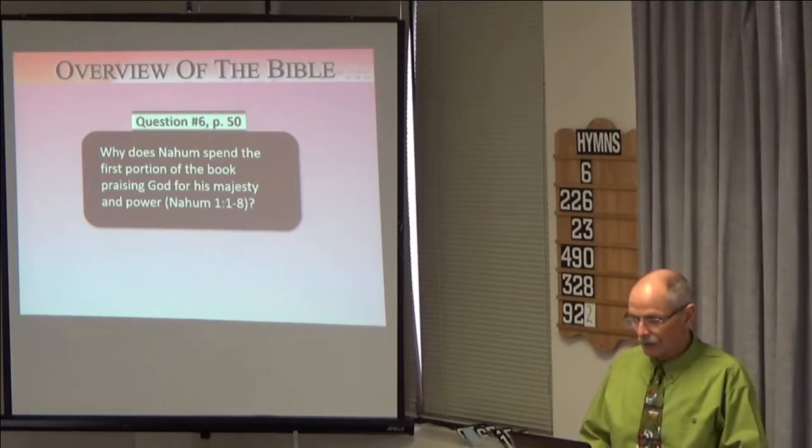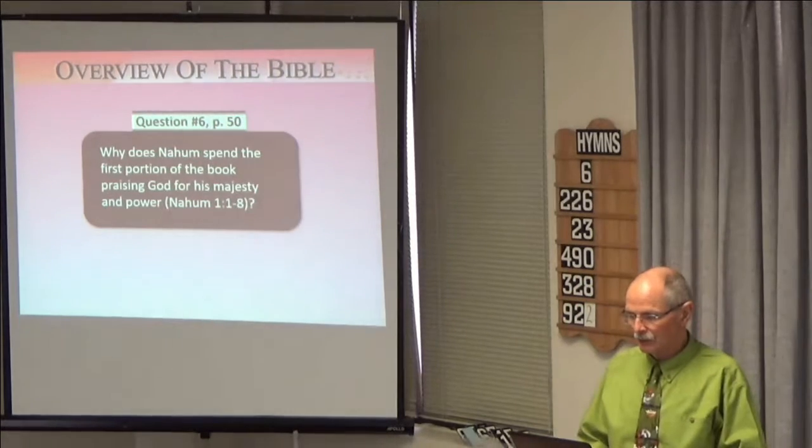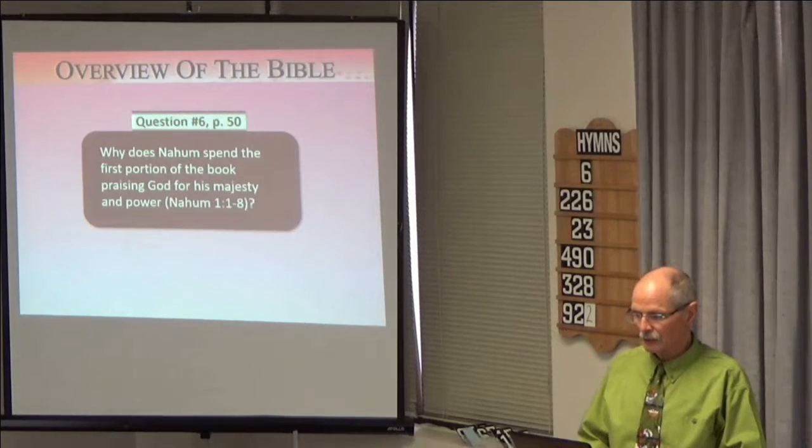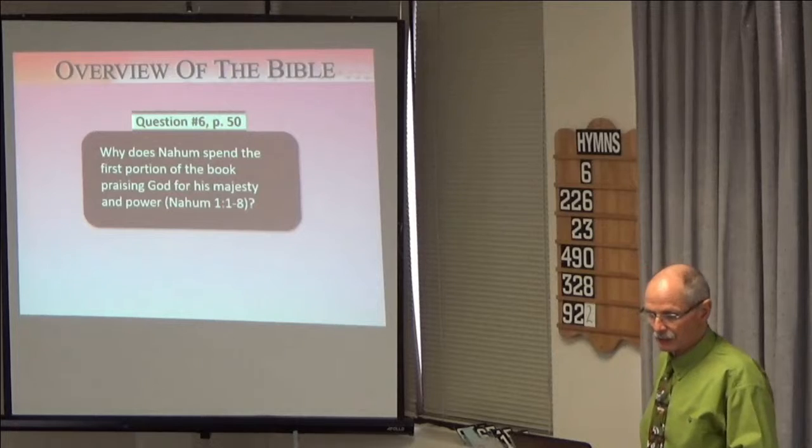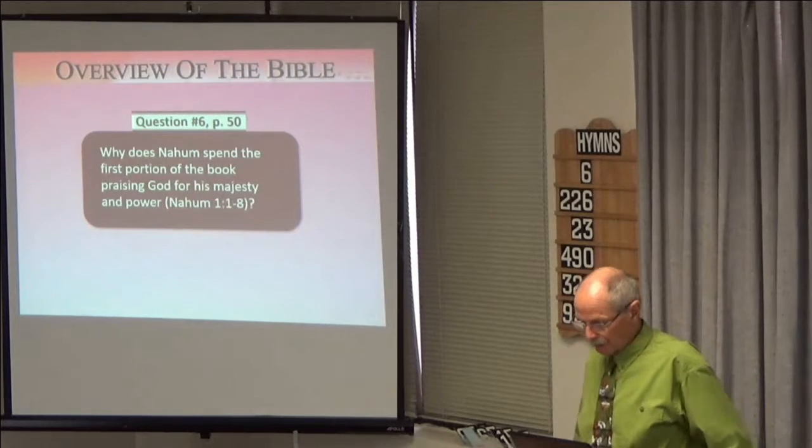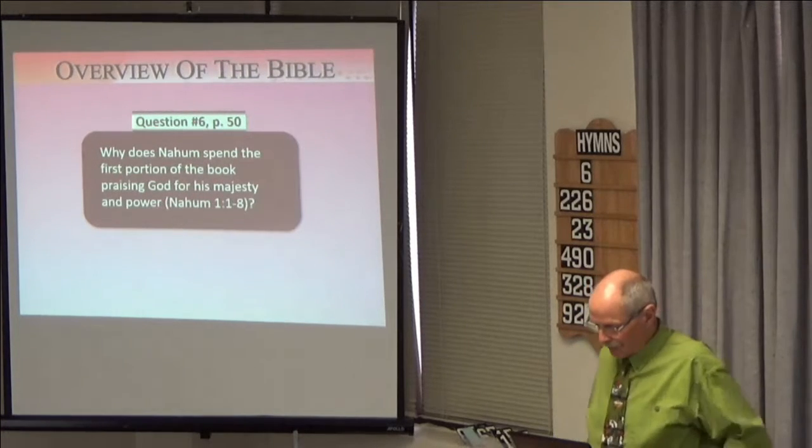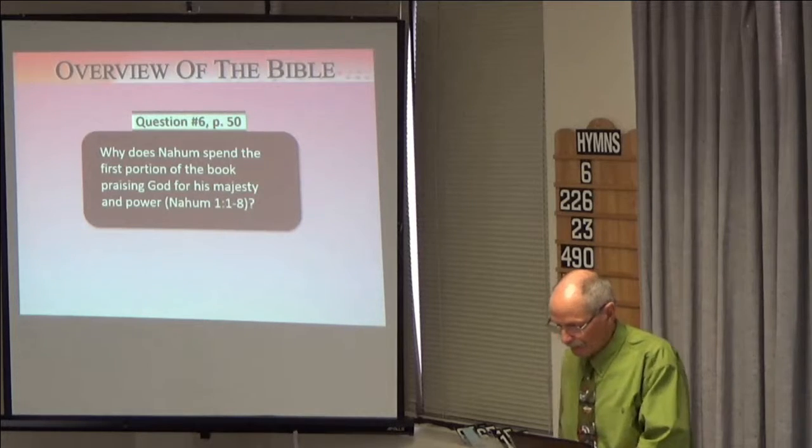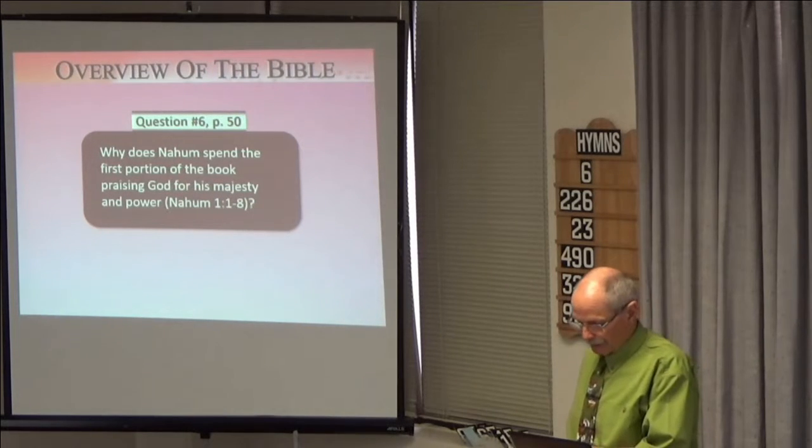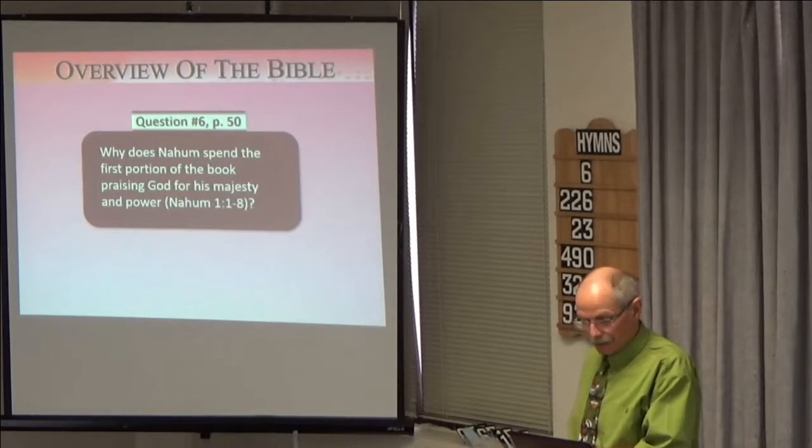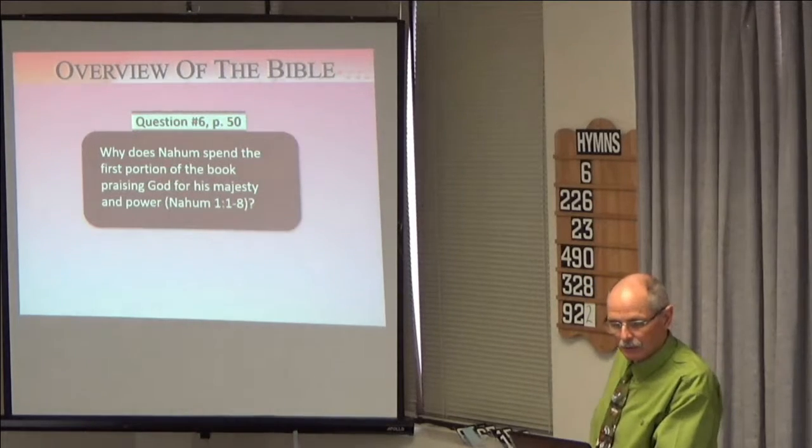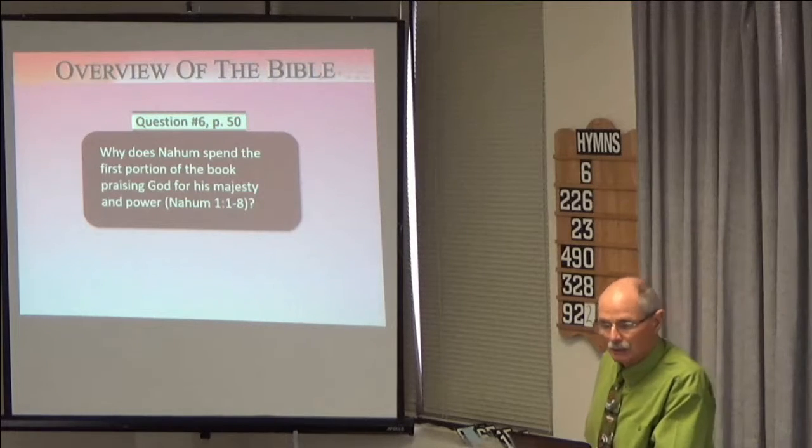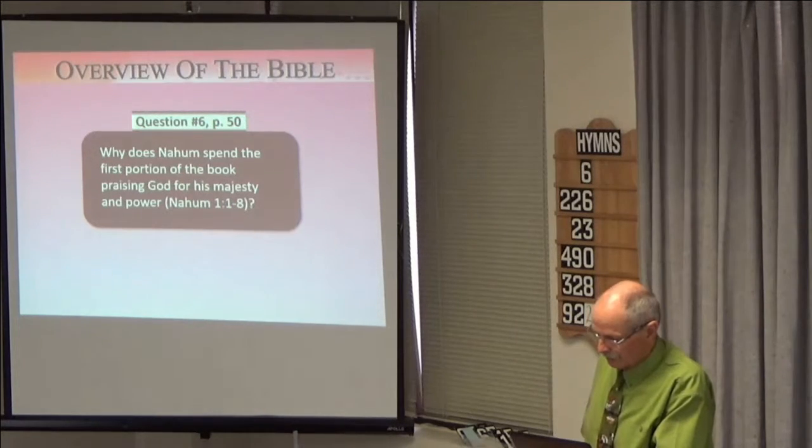Tammy, I'll get you just to read verses one and two. We'll just go verse by verse so we don't lose our thoughts. So, verse one and two, please. The burden against Nineveh, the book of the vision of Nahum, the Elkoshite. God is jealous and the Lord avenges. The Lord avenges and is furious. The Lord will take vengeance on his adversaries and he reserves wrath for his enemies.